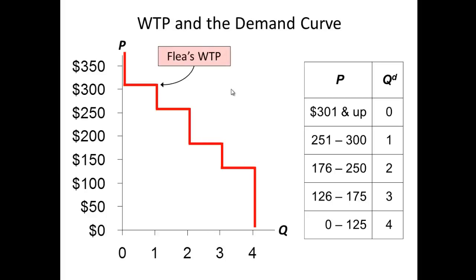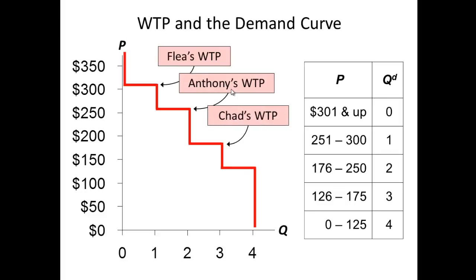As you can see here, that's Flea's willingness to pay, there's Anthony's, there's Chad's, and there's John's. And if we were to add even more consumers, at some point this would smooth out. This concludes willingness to pay by definition and the relationship between willingness to pay and the demand curve. I look forward to speaking to you in our next lecture, where we talk about consumer surplus. Have a good day.